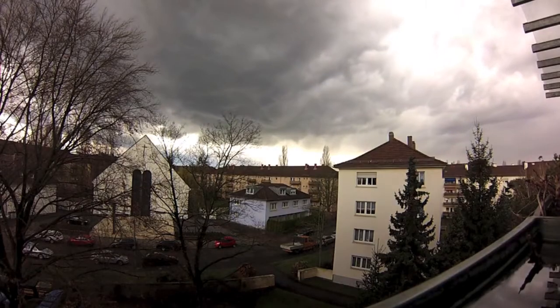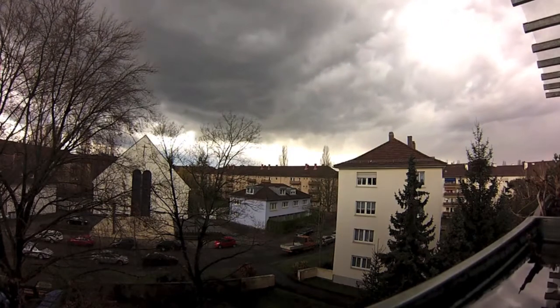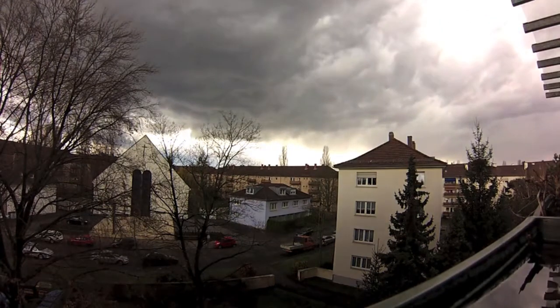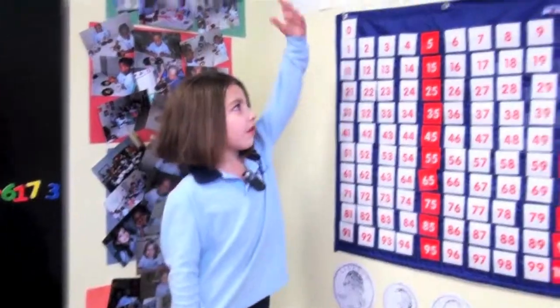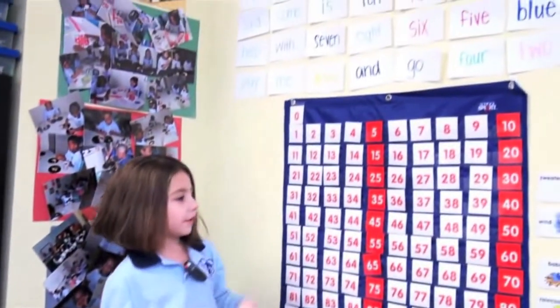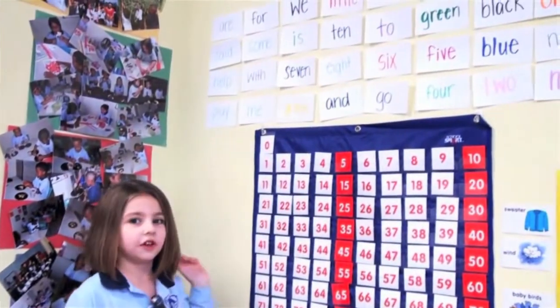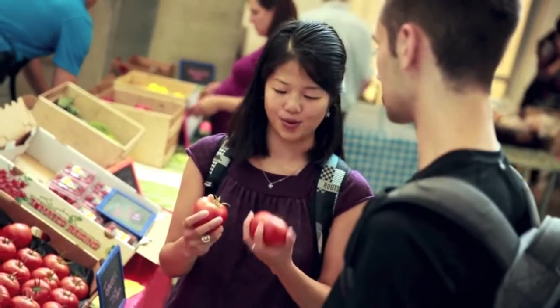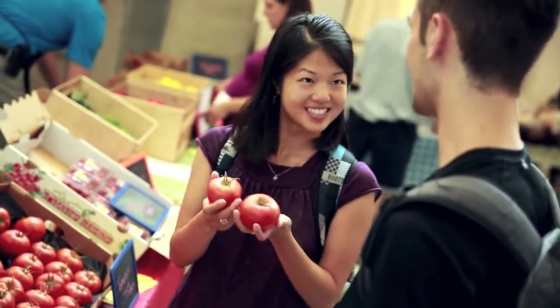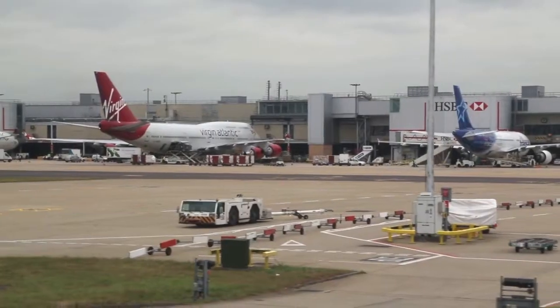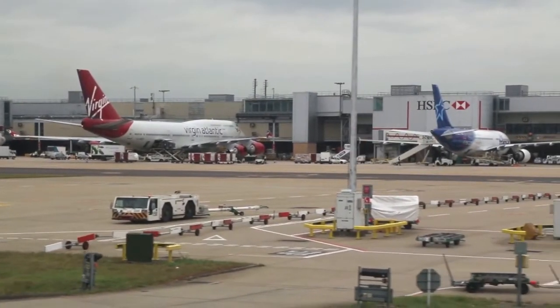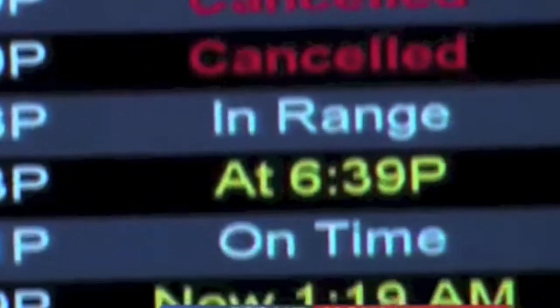Our daily lives are full of things that have variability. Even children are aware of it and its effects. As we grow up, we develop informal ways of dealing with variability and of estimating the likelihood of various outcomes.